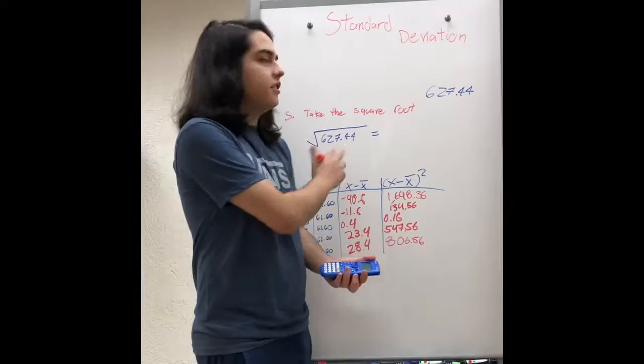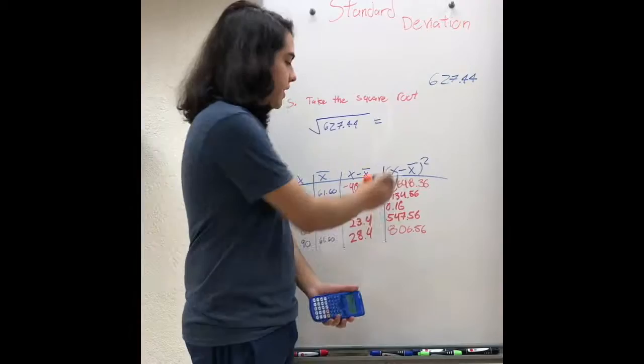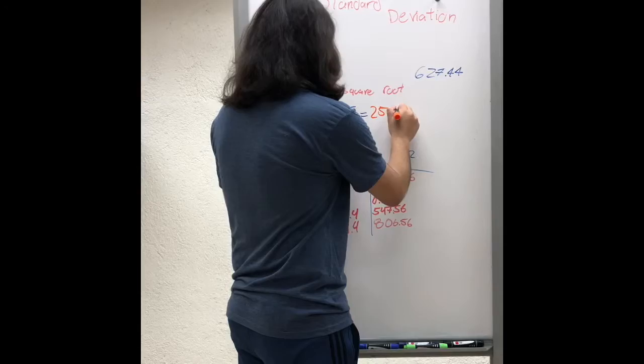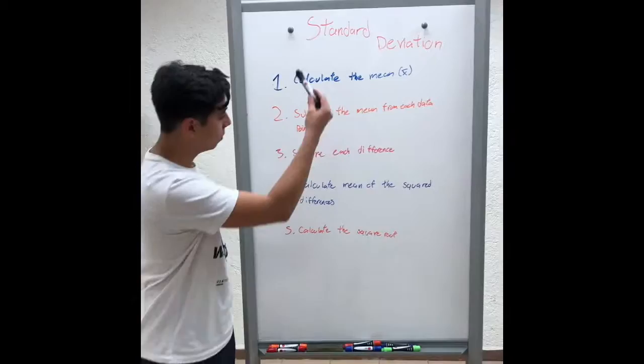Well, the last step is just taking the square root of the product we have. So, the product of the mean of these products is 627.44. And the square root is 25.05.